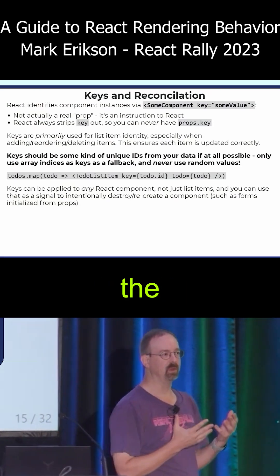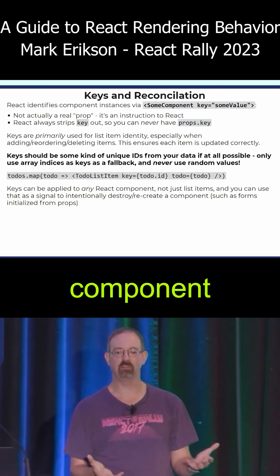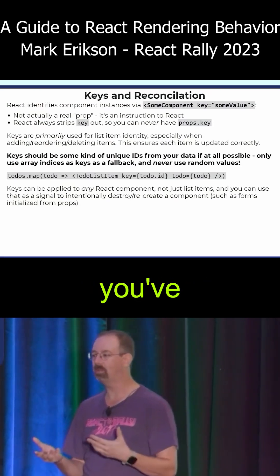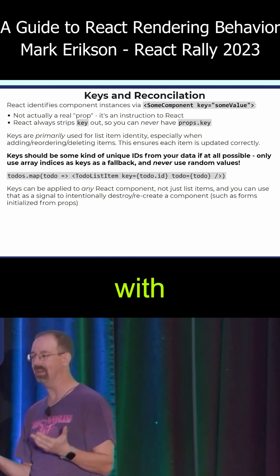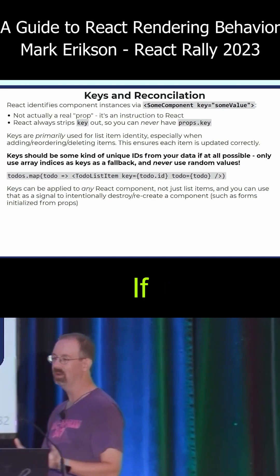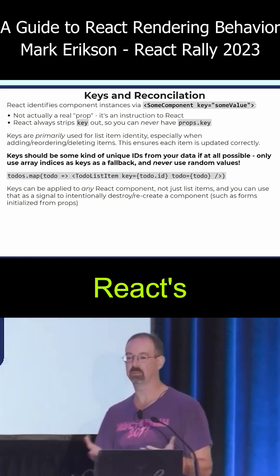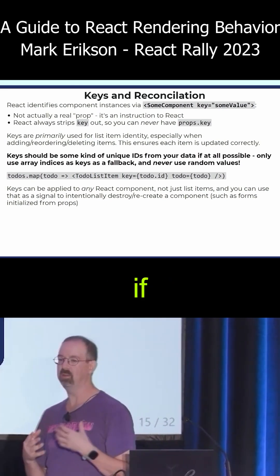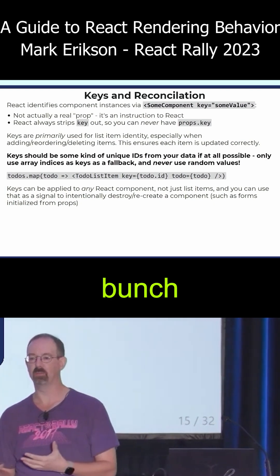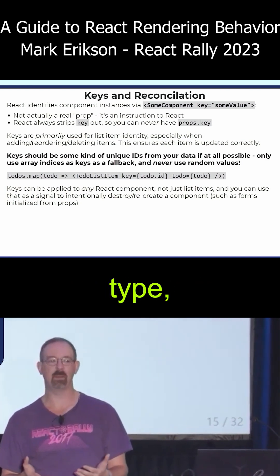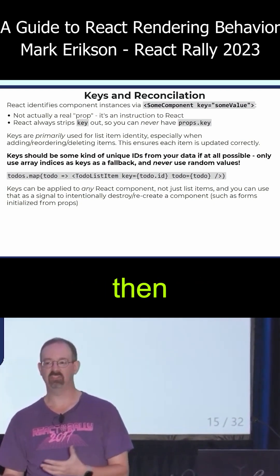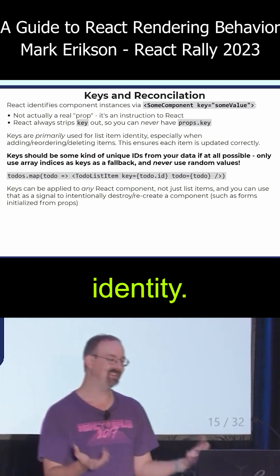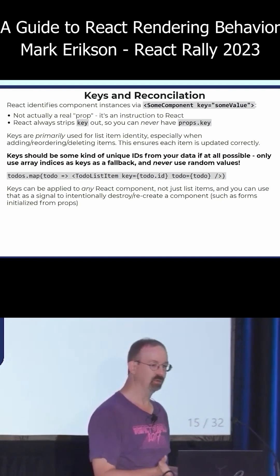Another way that React controls the component tree is with keys. You've probably seen these with lists. If you don't include the key, React is going to print a warning. That's because if you create a whole bunch of components of the same type and then they change, React needs to know identity.